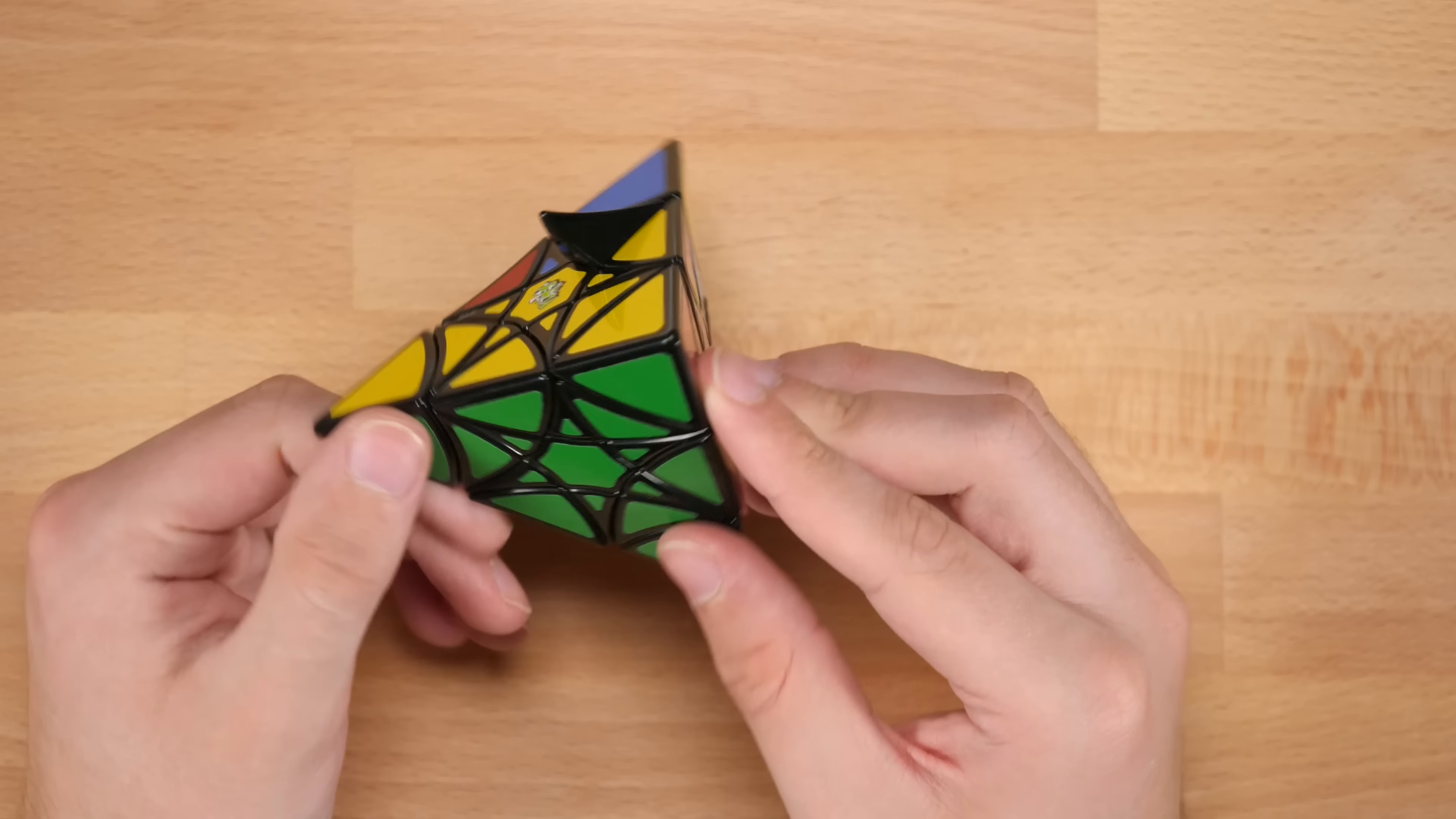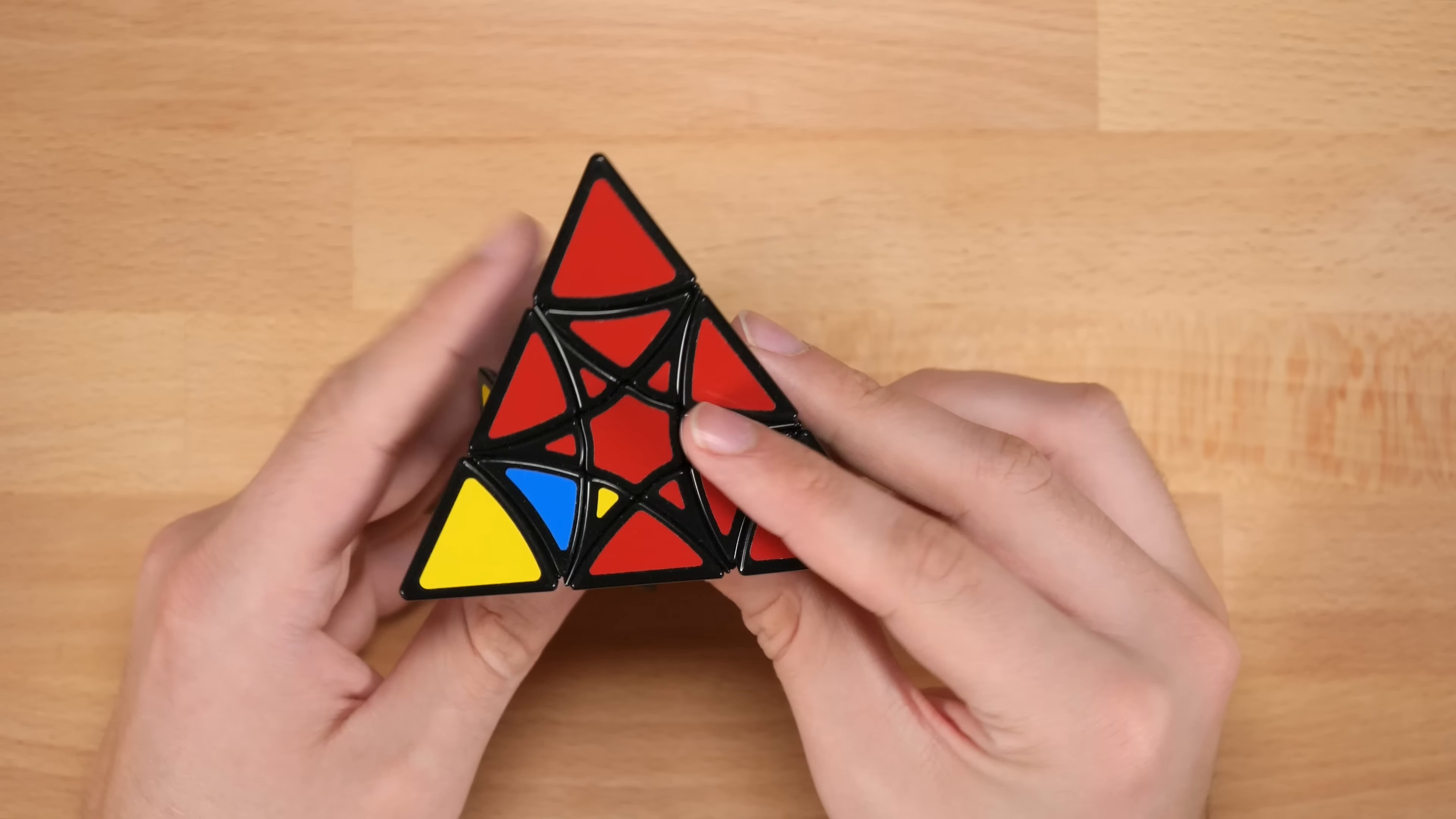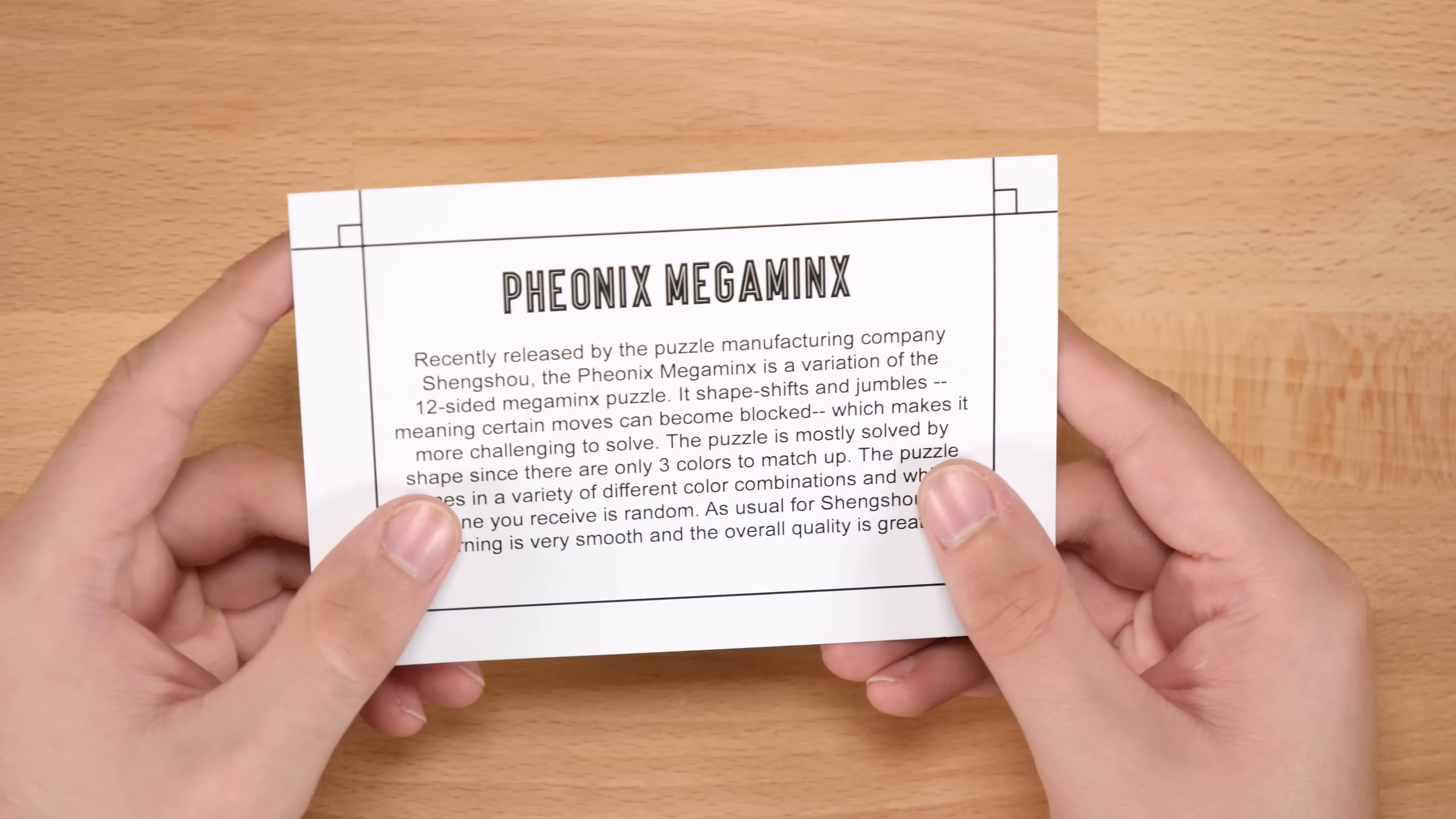I think I'm going to call it there because I am not making any progress and I don't really know where to go from here. I'm pretty happy with the progress I've made so far. I think based on that scramble, which was probably not great, I did okay getting it fairly close. Cool, well that is the Star Pyraminx - definitely looks really cool and is a neat puzzle. It'll go well with the rest of the clover cubes. Let's move on to the Phoenix Megaminx.